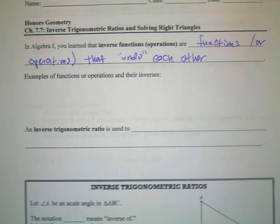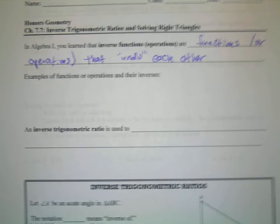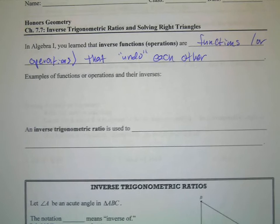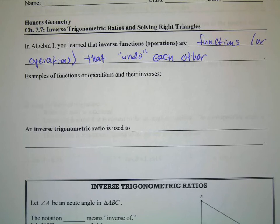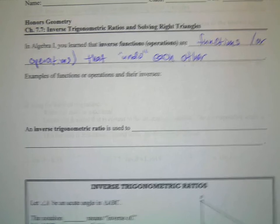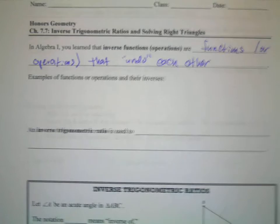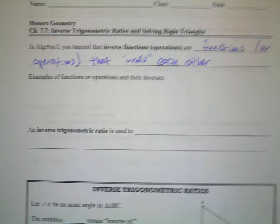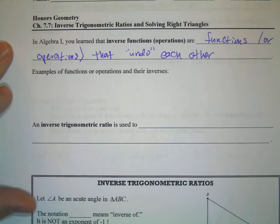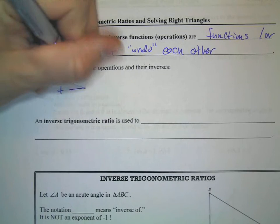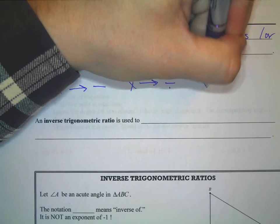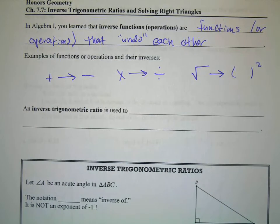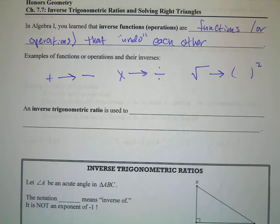What you're used to is how we solve equations — you find the operations that cancel each other out or undo each other. Examples of functions that undo each other would be: addition undoes subtraction, multiplication undoes division, and taking the square root undoes something being squared. Those are all examples of inverse functions or inverse operations — they cancel each other out.